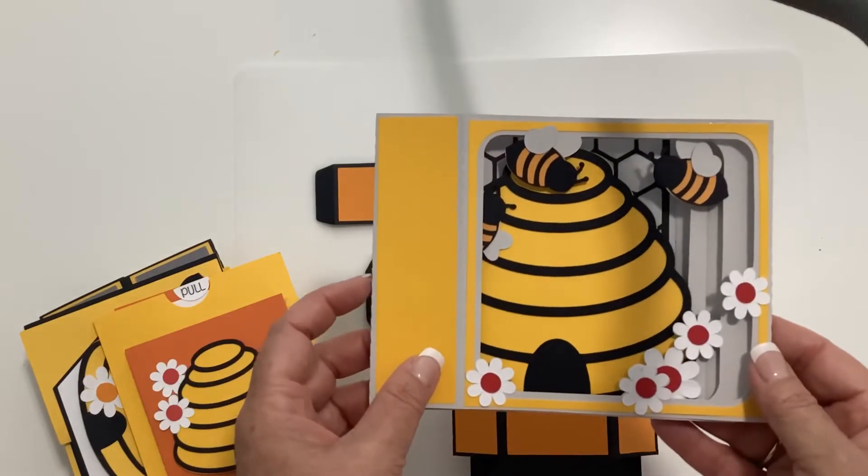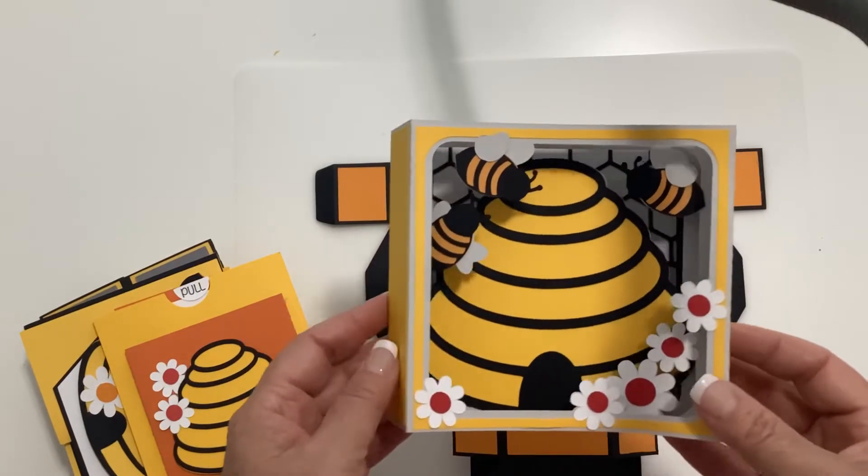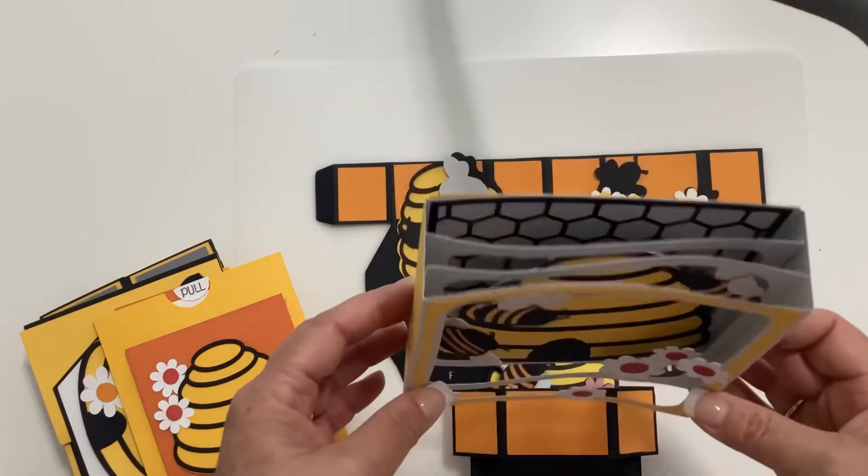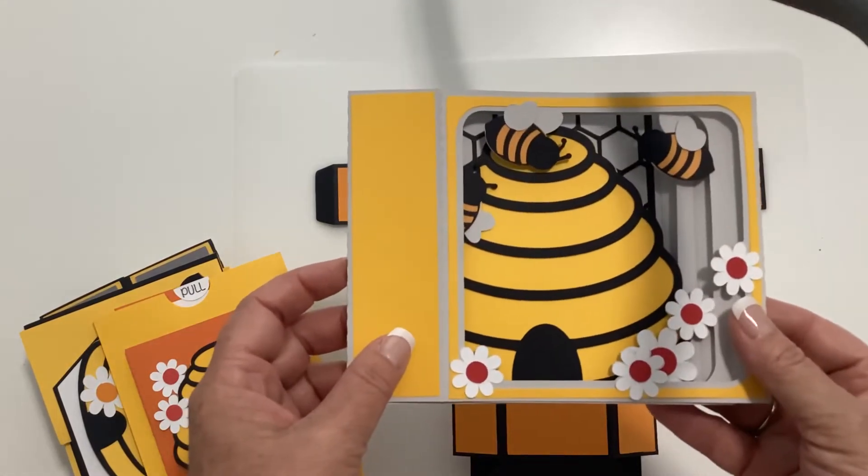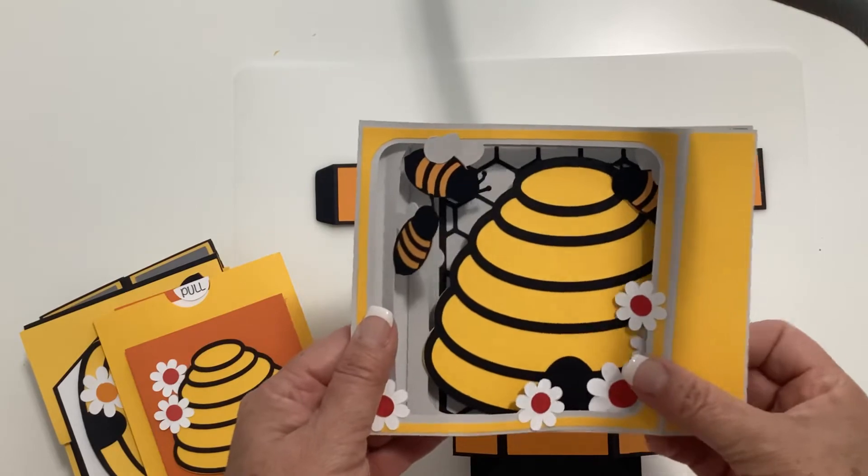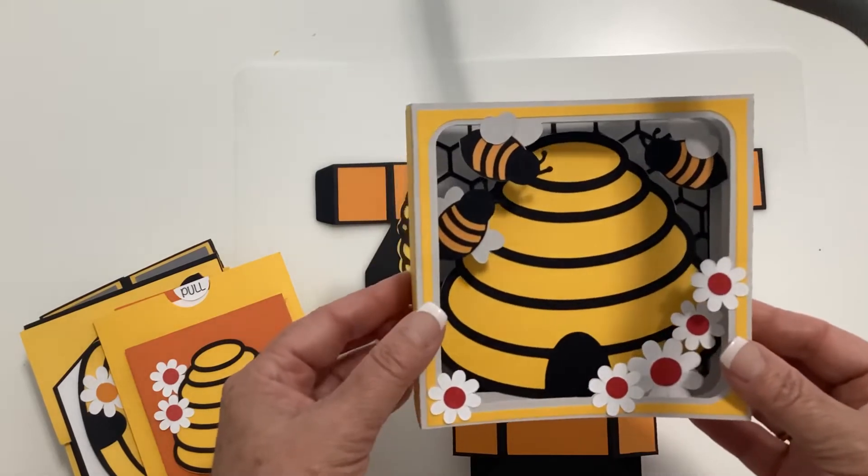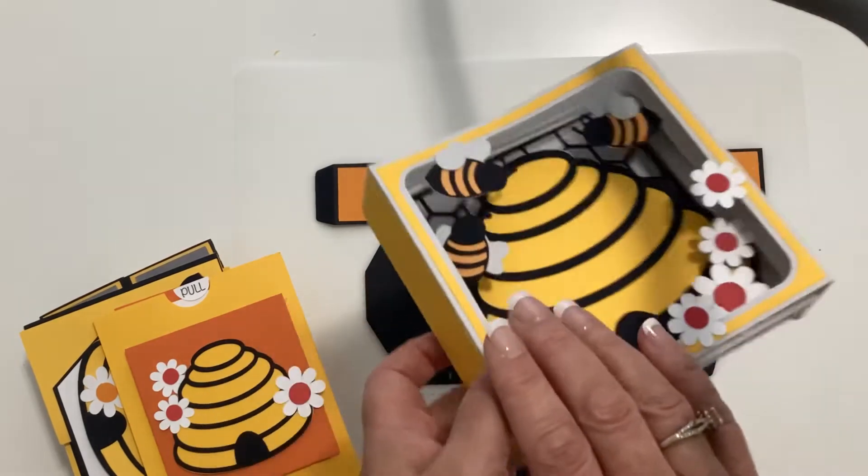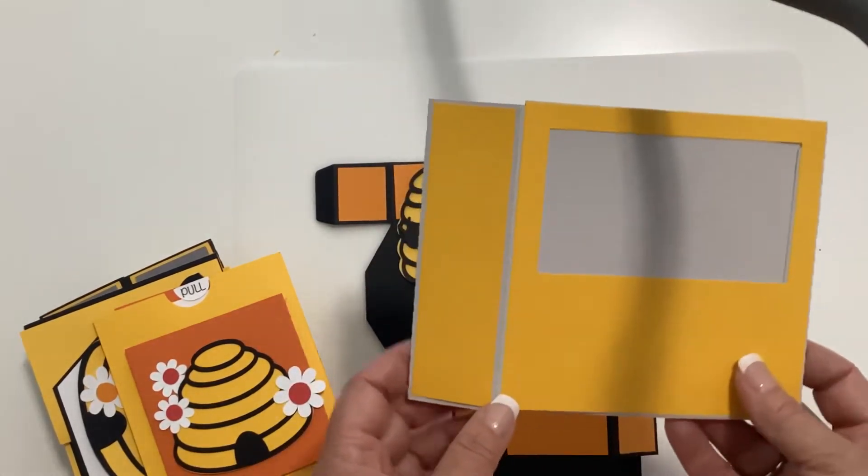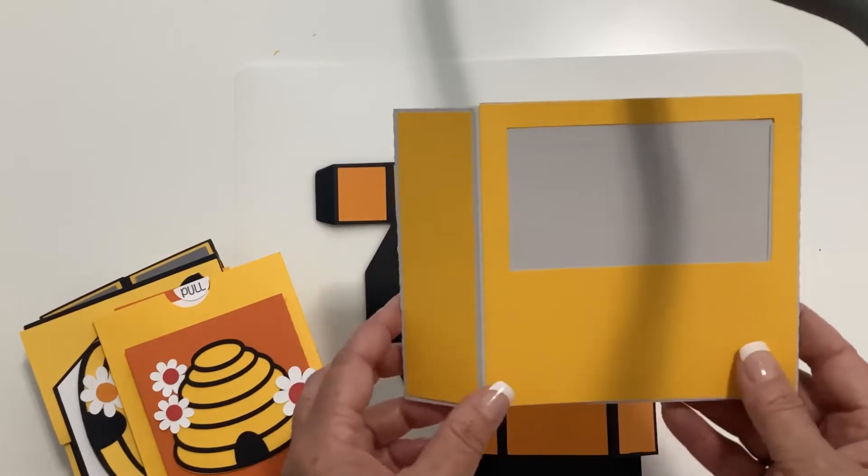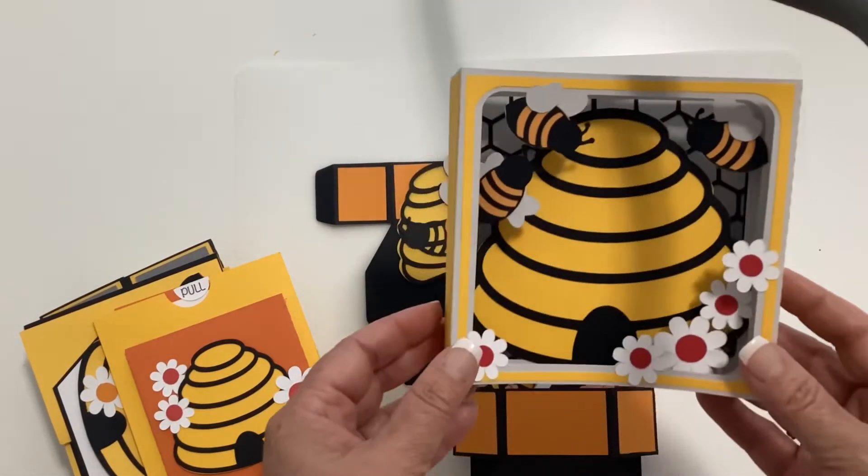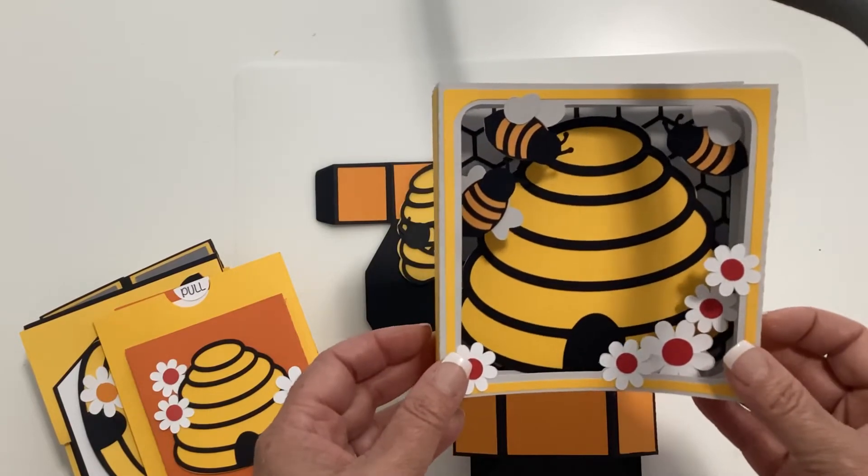So first off, I have this bee shadow box card. This is five and a half by five and a half. It fits a six inch envelope and it comes flat. You can mail it flat either direction and then when the receiver opens it up, they can pop it open and display it. And it also has a spot on the back so that you can write a message or share a sentiment. So that is the beehive shadow box card.